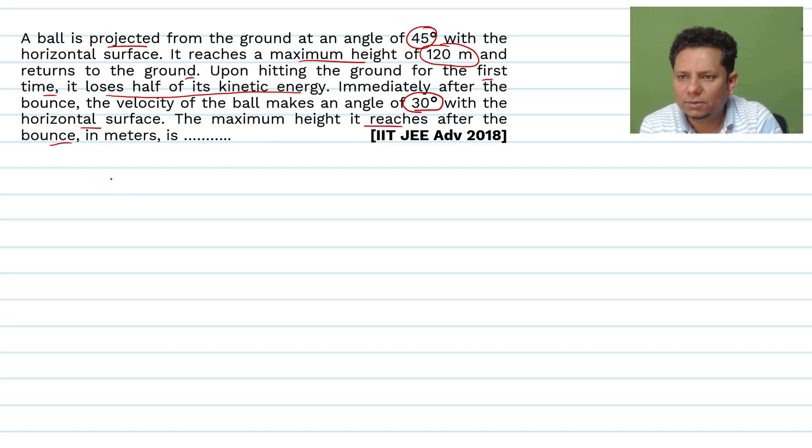The maximum height it reaches after the bounce in meters will be, or maximum height second bounce is what happens. Now this is the scenario. Let's say you have a horizontal ground, we have 45 degree angle launch here, theta 45 degrees, let's say u1 velocity.